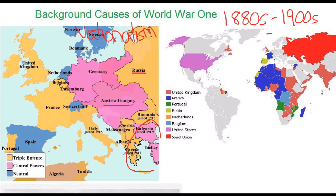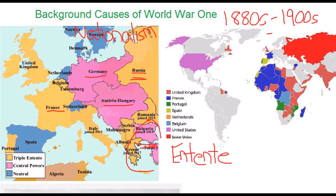Another background cause of the war was growing divisions between the central nations of Europe and the western and eastern nations. Germany was particularly concerned with France — they fought a number of wars in the 19th century, and Germany wanted to isolate France. So Germany, Austria-Hungary, and the Ottoman Empire created an alliance called the Triple Alliance against France and Russia, Germany's two traditional adversaries. France and Russia responded by creating the Triple Entente — a fancy French word for agreement — and as a result, European nations began squaring off against each other in military and political alliances.